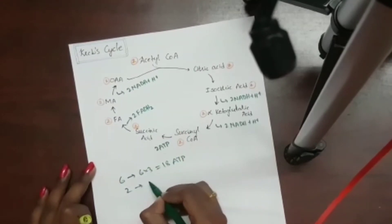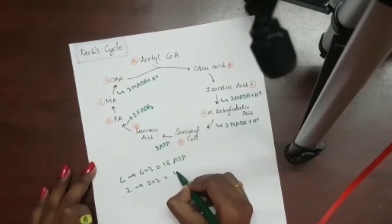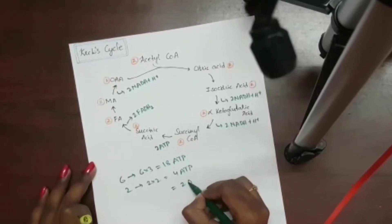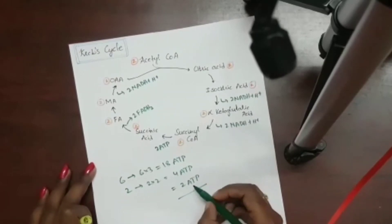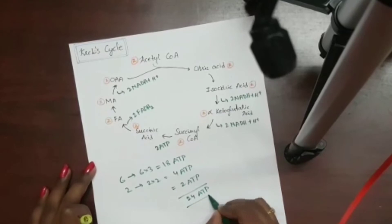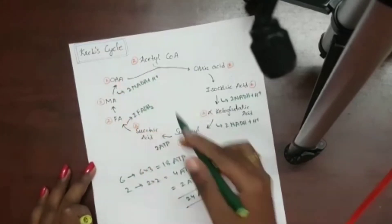2 FADH2 gives 2 times 2, 4 ATP. And directly, 2 substrate level phosphorylation, so 2 ATP. The total is 24 ATP. So the net gain of ATP in Krebs cycle is 24.